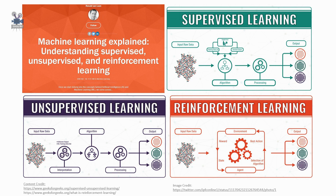For instance, suppose the machine is given an image having both dogs and cats which it has never seen before. The machine has no idea about the features of dogs and cats, so it can't categorize them as dogs and cats. But it can categorize them according to their similarities, patterns, and differences. The image can be split into two parts — one containing all images with dogs in it, and the second containing all images with cats in it.